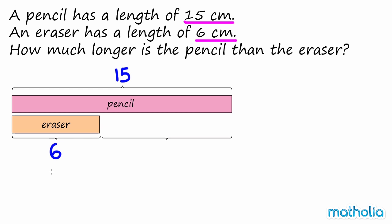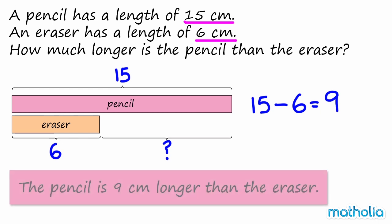To find the difference in length, we must subtract the length of the eraser from the length of the pencil. 15 minus 6 equals 9. So the pencil is 9 cm longer than the eraser.